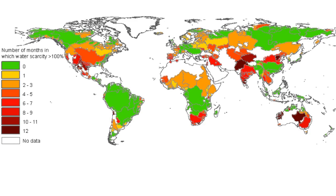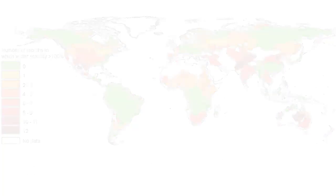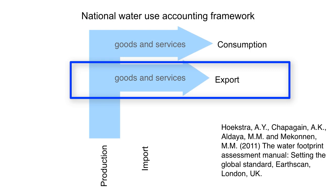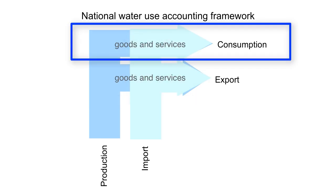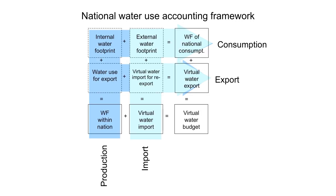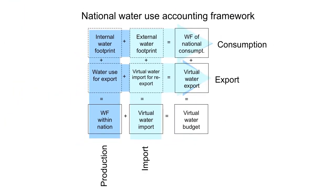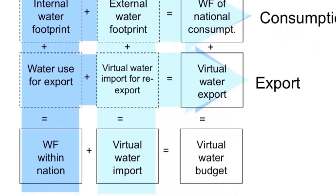This chart of water scarcity is based on national water footprints. Within a country, production activity results in goods and services that are internally consumed or exported. There is also trade activity consumed in the country or re-exported into goods and services. This results in what is called the virtual water budget, which is a sum of the water footprint of national consumption and the virtual water exported.